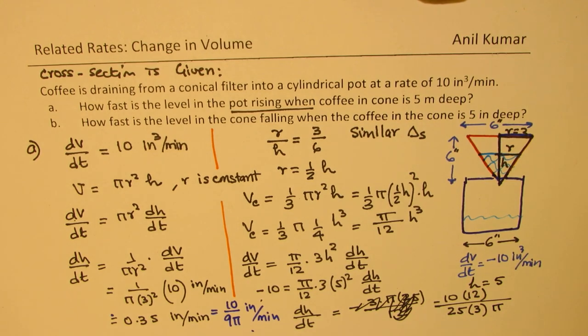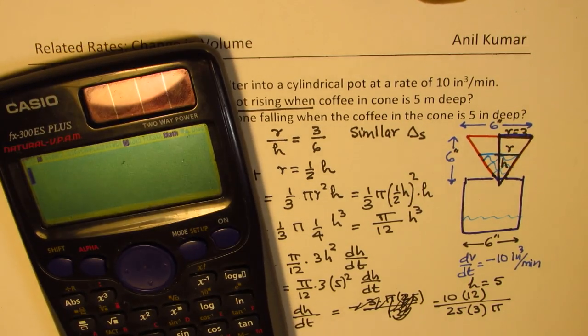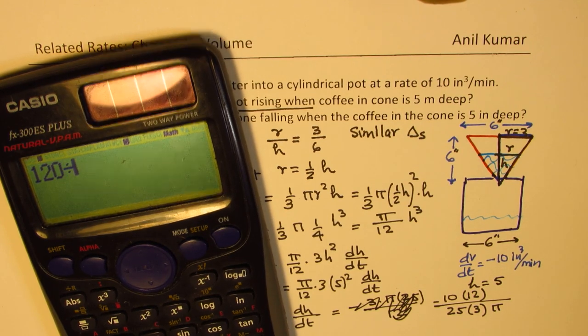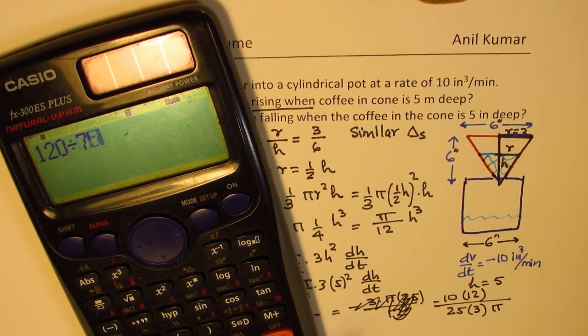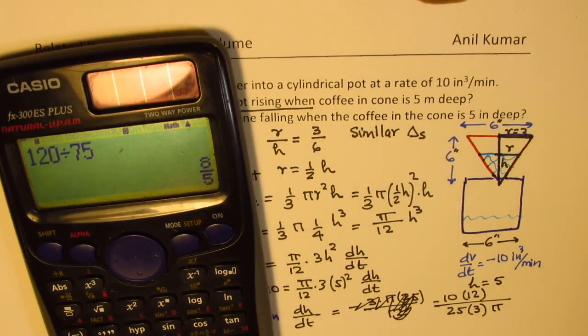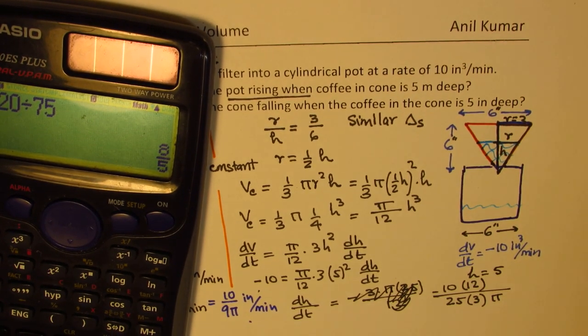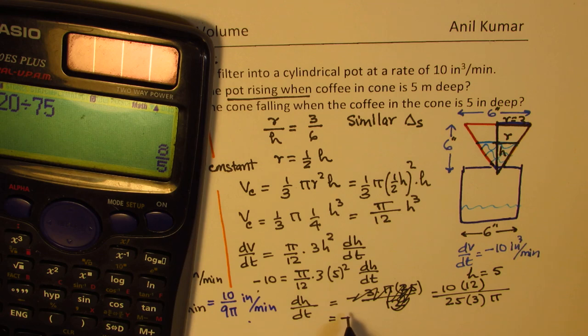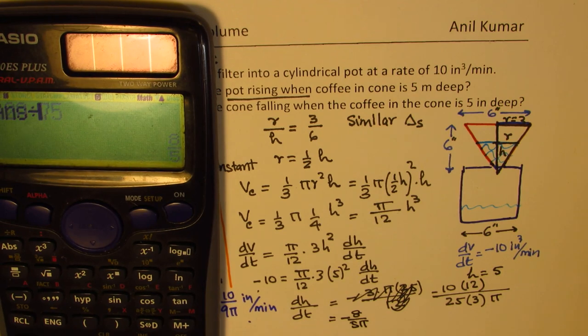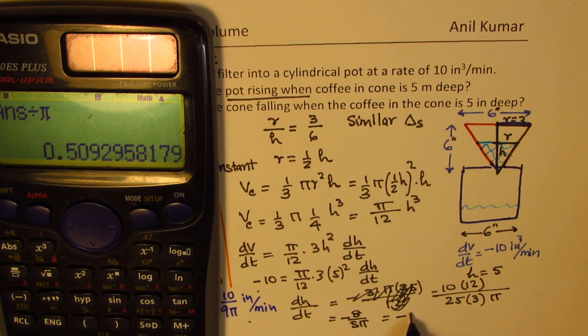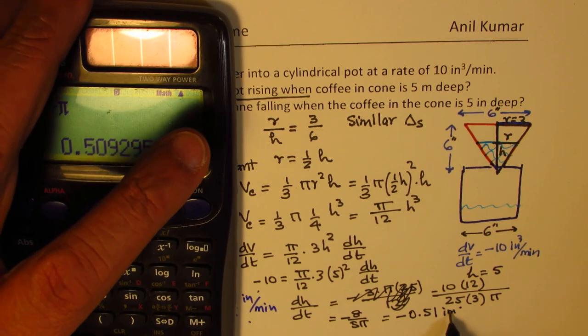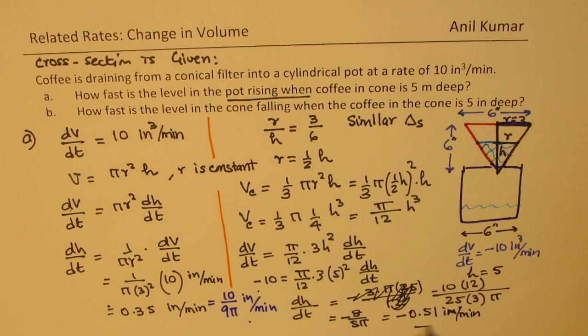We'll just use calculator to find this answer now. So we have 120 divided by 75, which is 8/5π. So we do get as -8/5π. Now divide by π. Decimal value is -0.51 inches per minute.